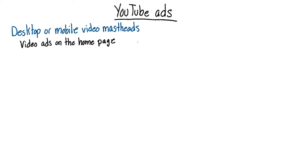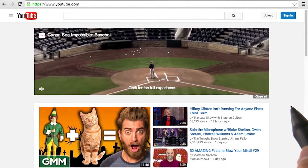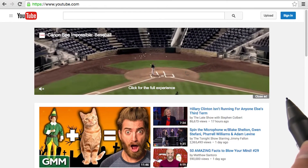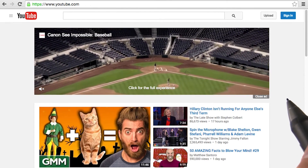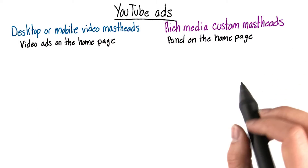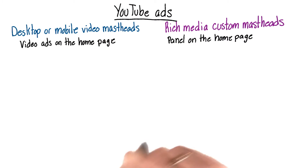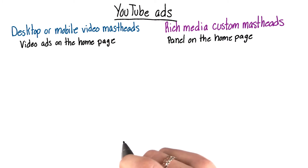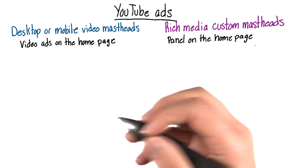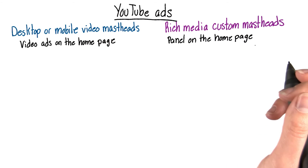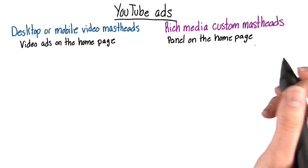Let's look at what those look like. Here's the video masthead. You can also have a rich media masthead, which would go in that same location. You can do a ton with the custom mastheads — from carousels, to cool videos, or just images. There are a lot of options out there.